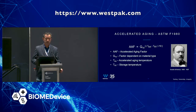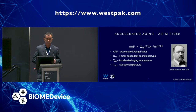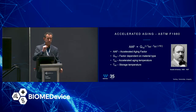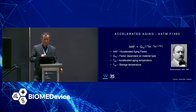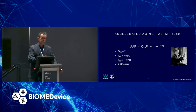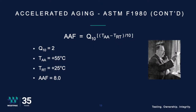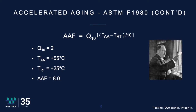The accelerated aging temperature is the temperature that you actually age the packages or your product, depending on your scope. Then we have the storage temperature, which is a range inside the standard from about +20°C to +25°C, so you can play with that within that range. It's very hard to predict what your storage temperature will be when you don't have control over that, which is why they give you a range. Q10 equals 2 comes right out of the standard — it's a very conservative number, but you can change the Q10, and we'll talk about that.